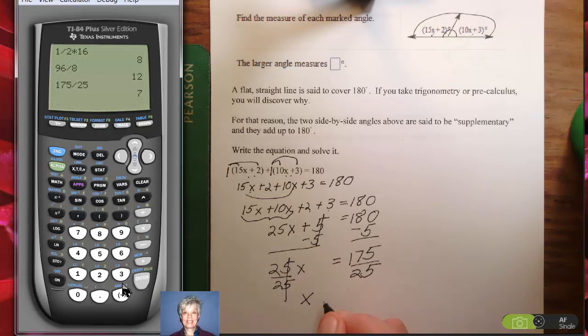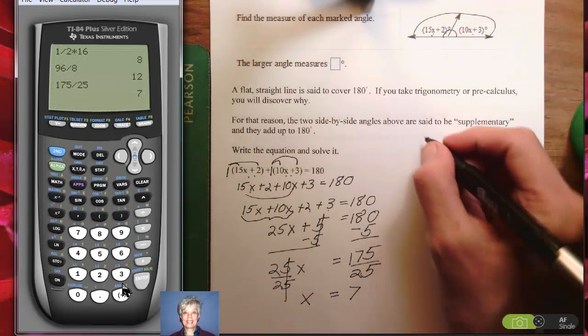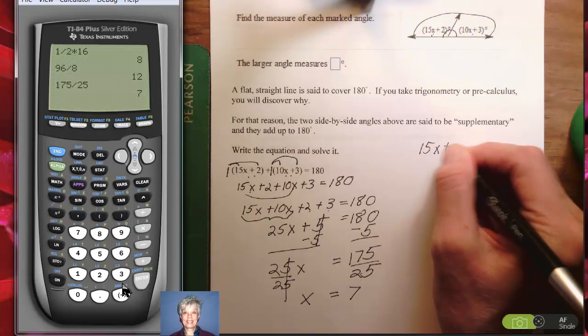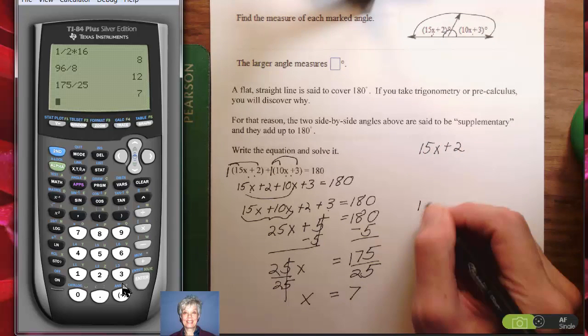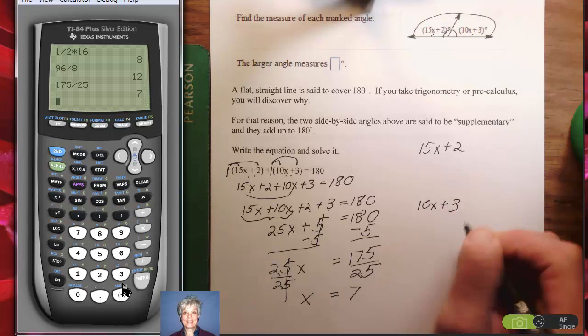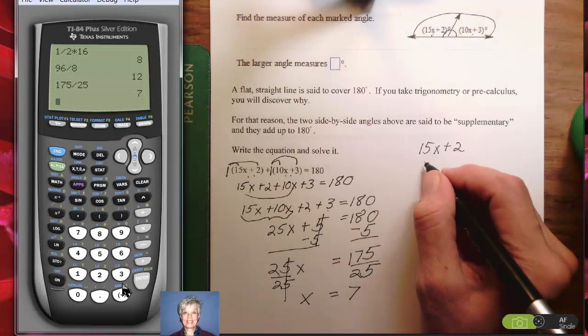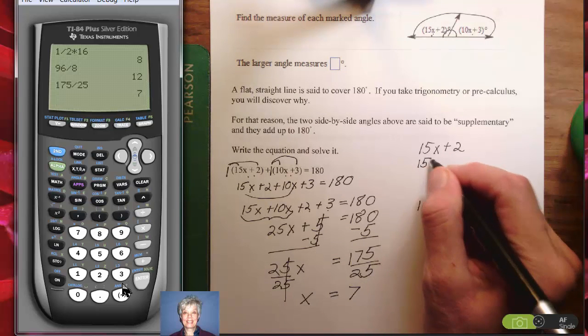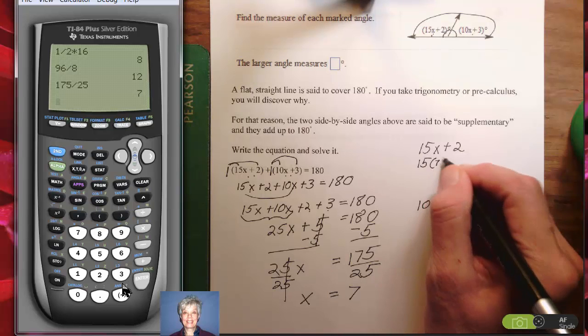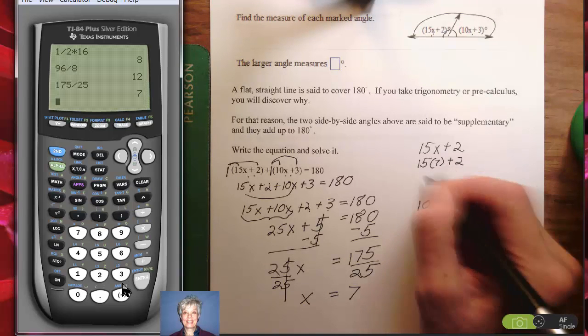So what are we looking for here? We have two angles. We have angle 15x plus 2, and we have angle 10x plus 3. I need to substitute 7 in both of these because we're being asked to find the larger angle, and how can you be sure what the larger angle is if you don't substitute the number? Actually, I think probably we should find out both because probably in the original MyMathLab problem, you are asked to find both angles.